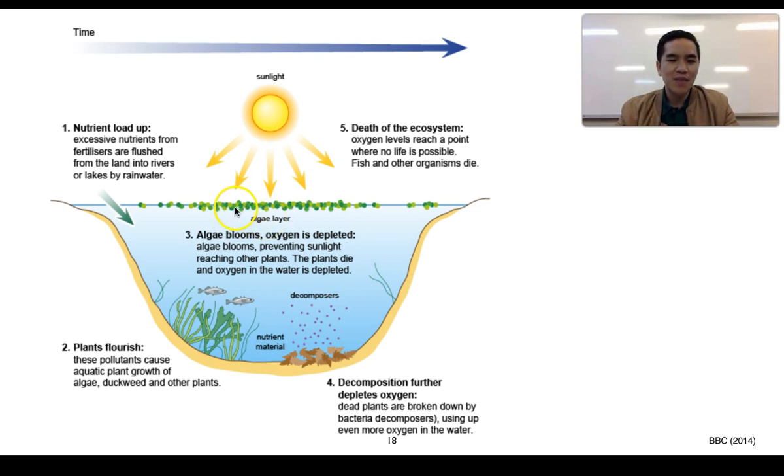The issue with this is that plants which are in the water would require sunlight, however this layer of algae will block sunlight which prevents those plants from photosynthesizing. What this means is that the plants will eventually die, and this is going to reduce the production of oxygen by these plants within the water itself.